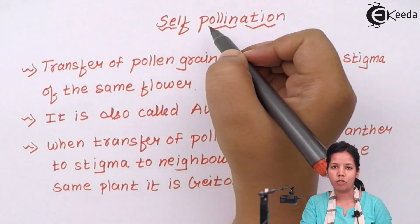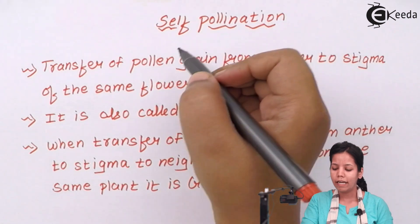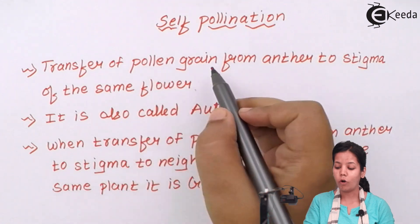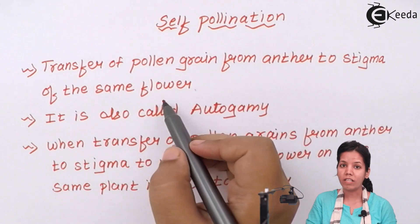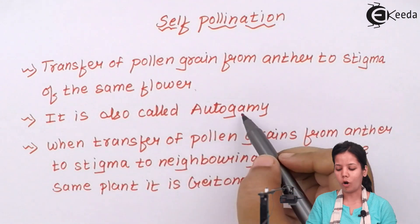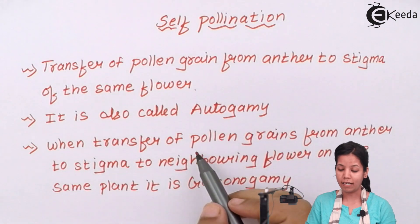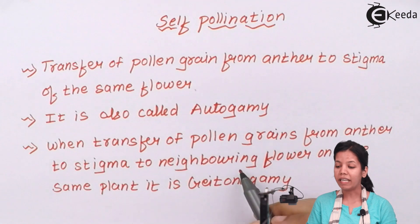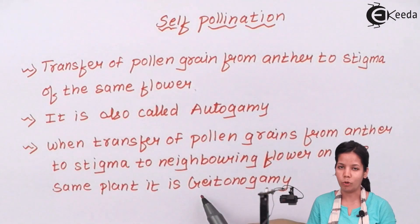Self-pollination is the transfer of pollen grains from anther to stigma of the same flower. Self-pollination is also called autogamy. But when transfer of pollen grains takes place between neighbouring flowers present on the same plant, it is called geitonogamy.